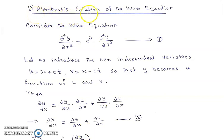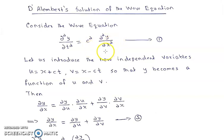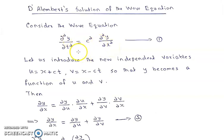Here we consider the element solution of the wave equation. Consider the wave equation ∂²y/∂t² = c² ∂²y/∂x², and we consider it as equation 1. Here y is the dependent variable and x and t are the independent variables, that is y is a function of x and t.